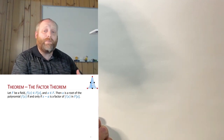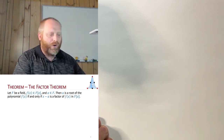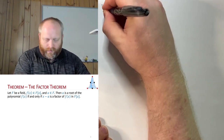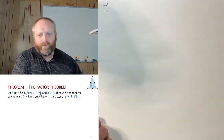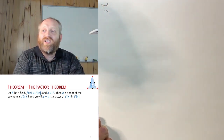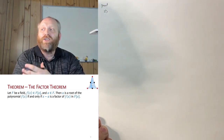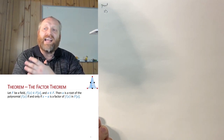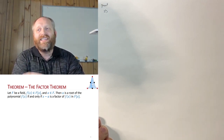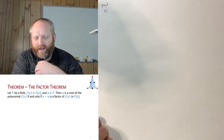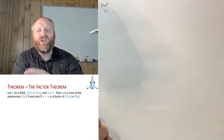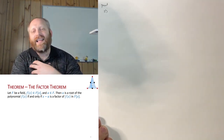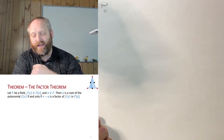It's an if-and-only-if statement, so we have to work it in both directions. Moving with the assumption that a is a root of f(x), we want to show that x minus a is a factor of f(x) in f[x]. We'll use the remainder theorem and the definition of divisibility.